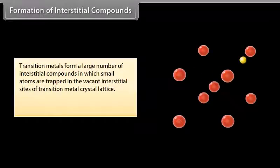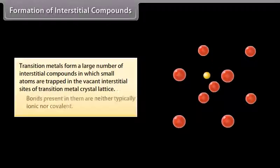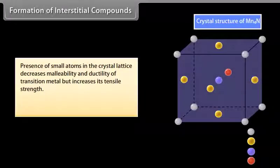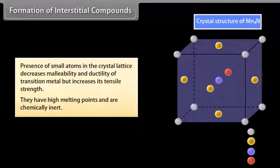Transition metals form a large number of interstitial compounds in which small atoms are trapped in the vacant interstitial sites of the transition metal crystal lattice. Bonds in them are neither typically ionic nor covalent. Examples include Mn₄N and Fe₃H. The presence of small atoms in the crystal lattice decreases malleability and ductility but increases tensile strength. For example, cast iron and steel are hard due to trapped carbon in their interstitial spaces. These compounds have high melting points and are chemically inert.